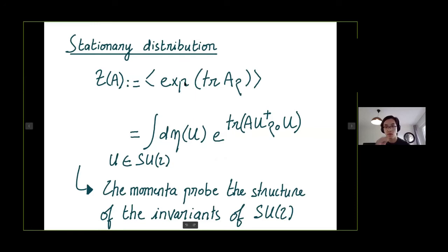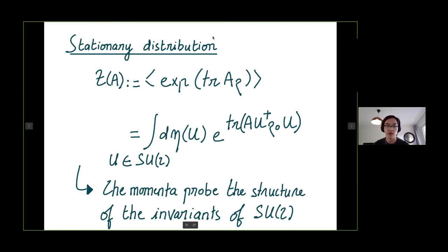The stationary distribution also has a nice description. If I write the generating function in the stationary state, where A is just a variable for my generating function, it is given by an integral where η(u) is the Haar measure of the unitary group SU(2). This means the different moments of the spin problem reflect the invariance structure of SU(2). If you like group theory, this is quite nice, and there is an explicit expression known as the Harish-Chandra expansion.